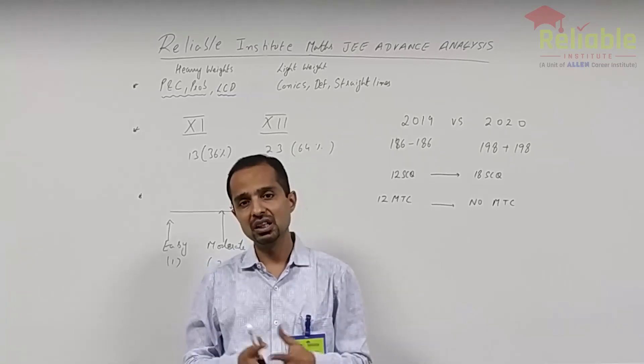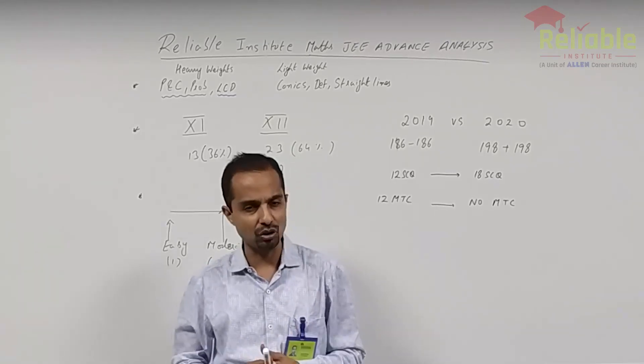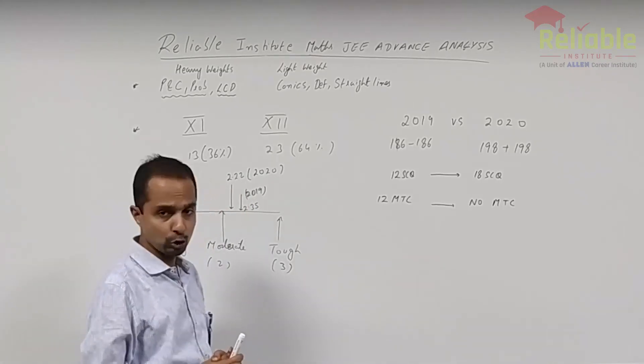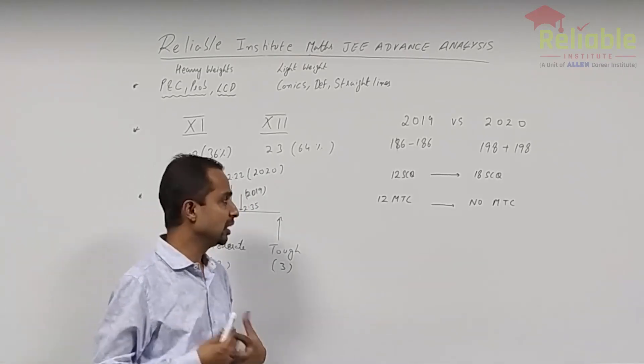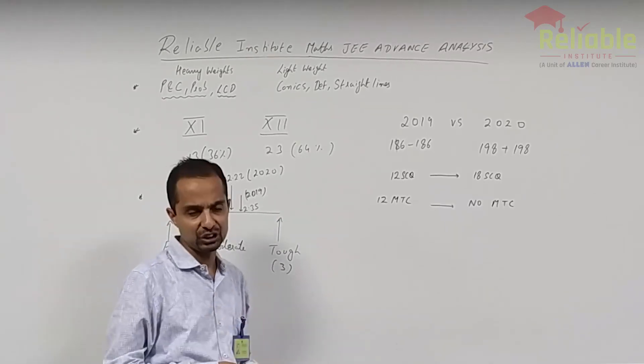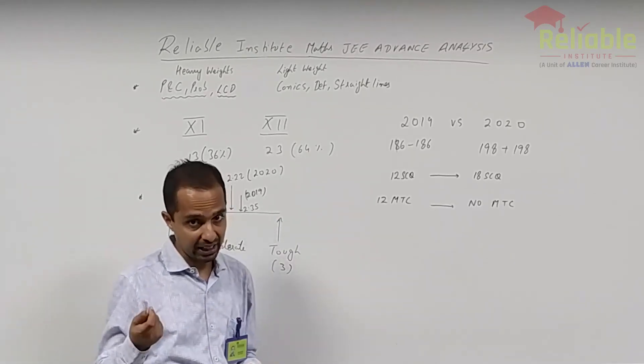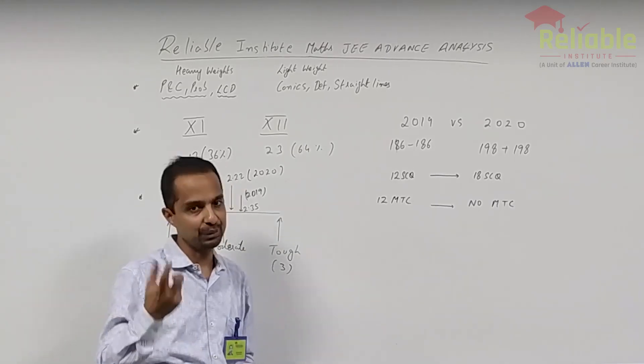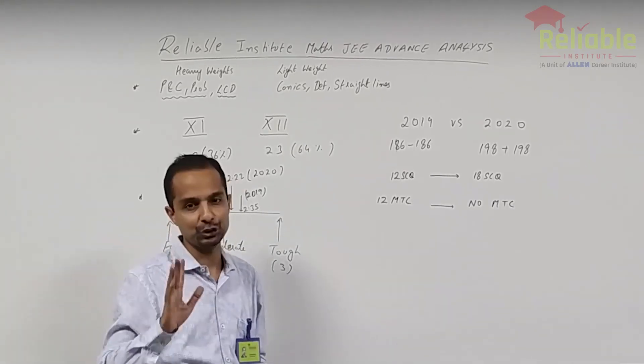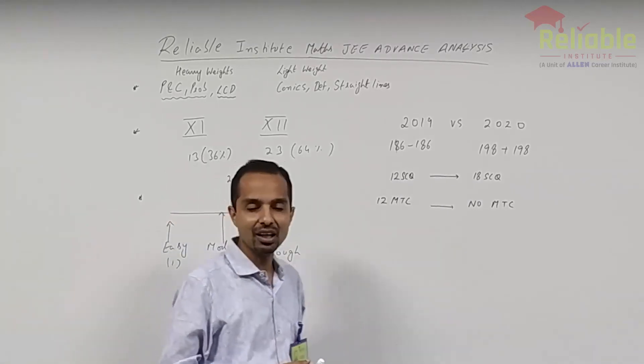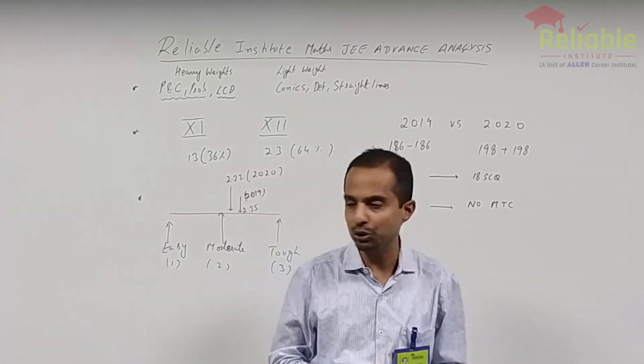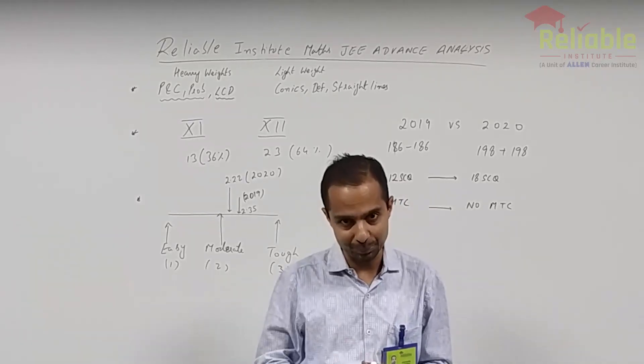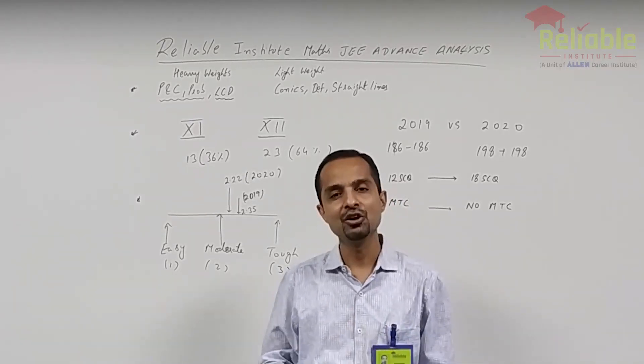But certainly, physics and chemistry will also have a great impact on it. And what I have heard from the students is that physics came a little tough on the tougher side, but the experts will be able to tell you better. So what I presume from 2019, if X percentage gave you certain rank, this year, X minus percentage will give you the same rank. It won't be X plus for sure. I hope this analysis would be very helpful to you. And everybody, whosoever has given 2020 paper, would have played well. All the best.